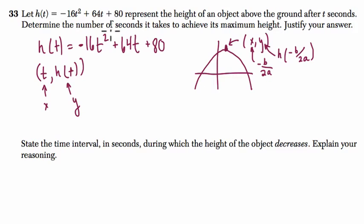b is the coefficient of the t term, so b is 64, and a is the coefficient of the t squared term, negative 16. So negative b over 2a is negative 64 over 2 times negative 16, negative 32, and that is t equals positive 2.